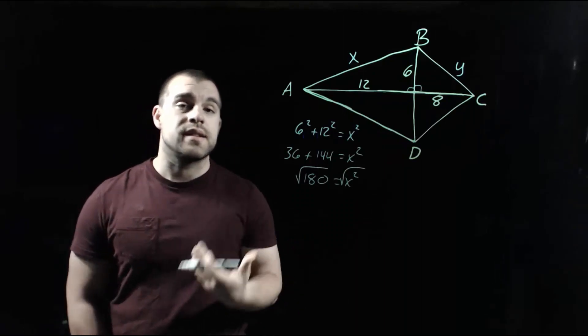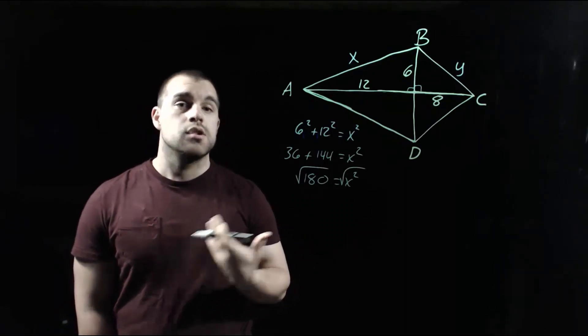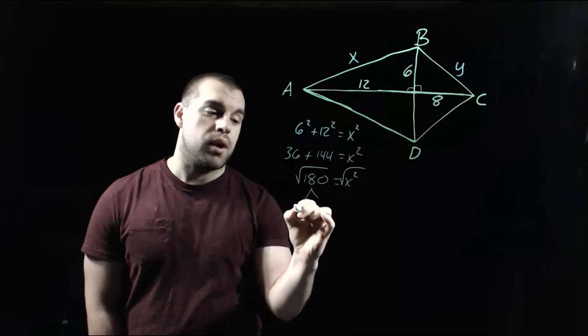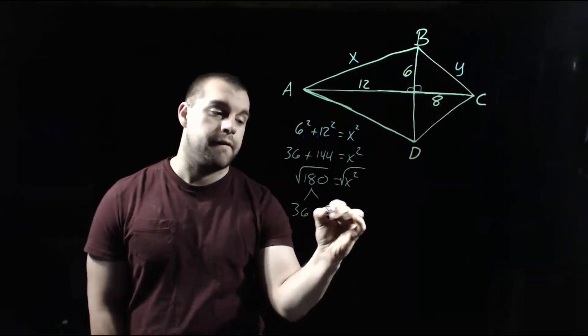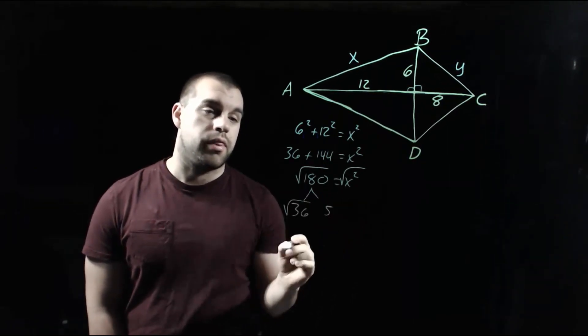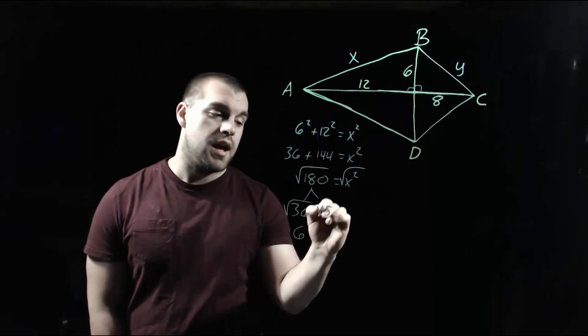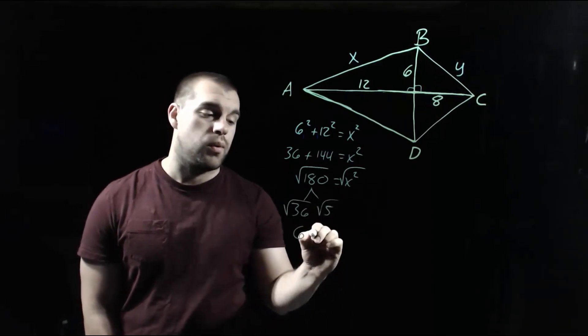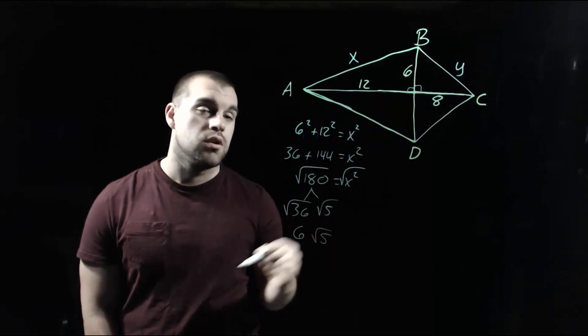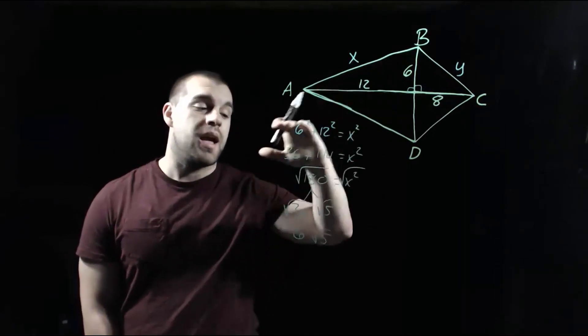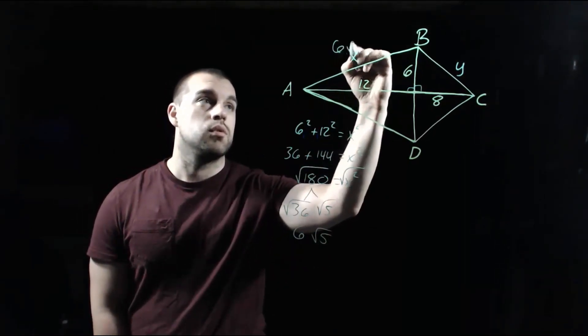Now, 180 is not a nice, perfect square number, so what I'm going to do is break it down. 180 breaks down into 36 and 5. If we square root 36, we get 6, and we can't do anything with the square root of 5, so that just stays as root 5. So that length from A to B is 6 root 5.